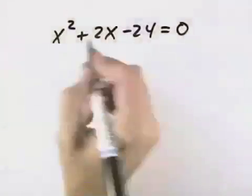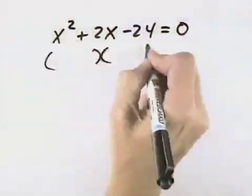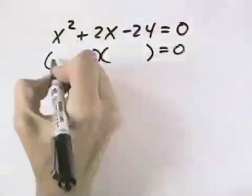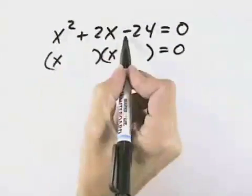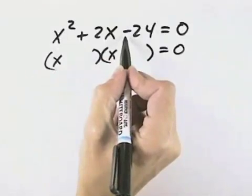So in this case, we have x squared plus 2x minus 24. We want to factor that so we can set each factor equal to zero separately. We know the first terms have to be an x. The last term, negative, says the signs will be opposite.